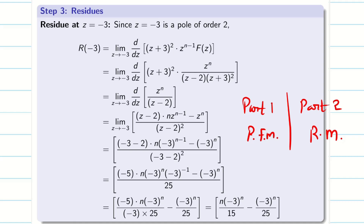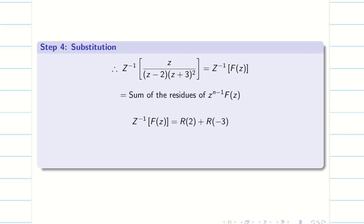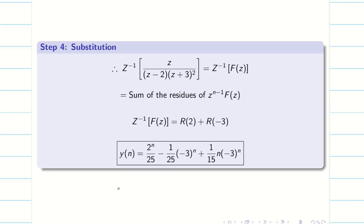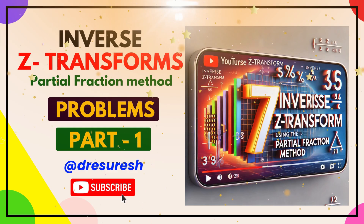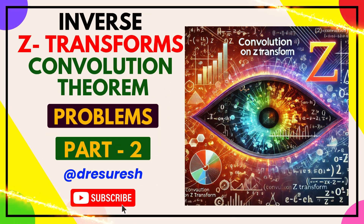I hope you understand. Now you will have the confidence to do any problems in difference equations. Finally, we have to write the answer: Z inverse of F(z) is the sum of residues of Z power n minus 1 into capital F(z), which is R(2) and R(minus 3). And we know that Z inverse of F(z) is Y(n) — this is my required answer. Thanks for watching. Subscribe to our channel and share with your friends. See you in the next video. Bye-bye.